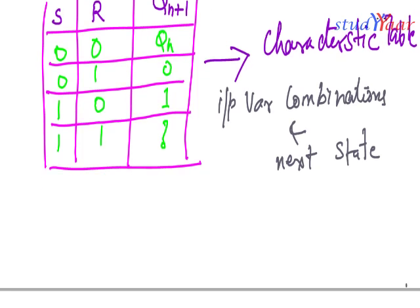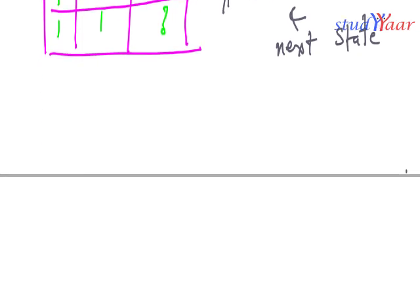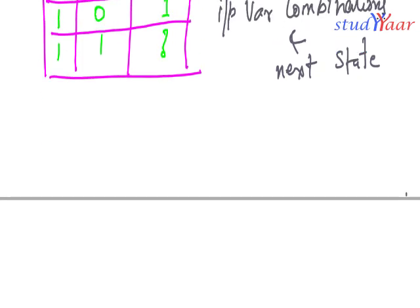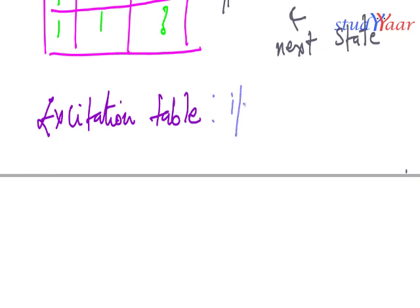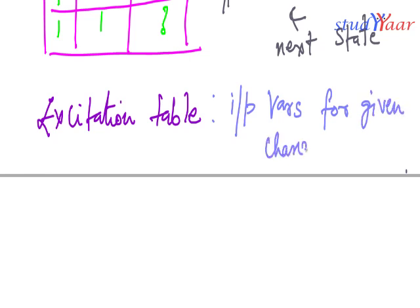We have another table which we call the excitation table. The excitation table gives you input variables for a given change of state. So what do we mean by this?